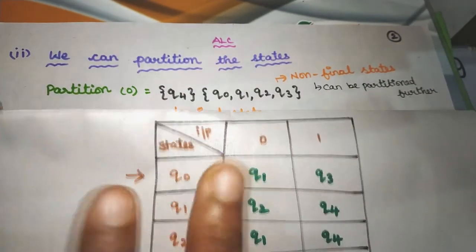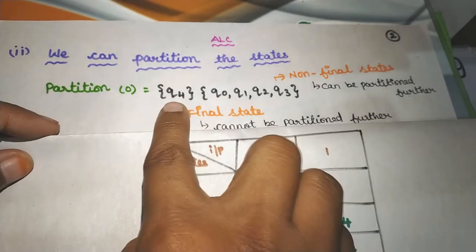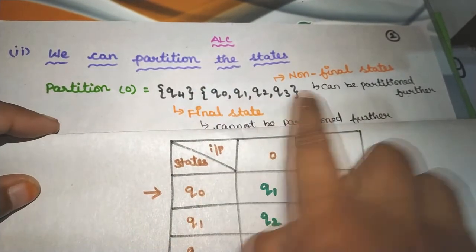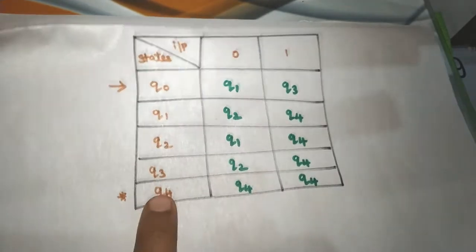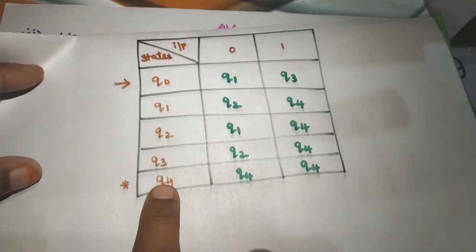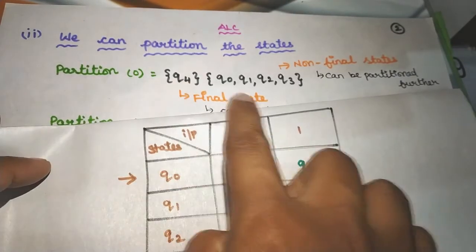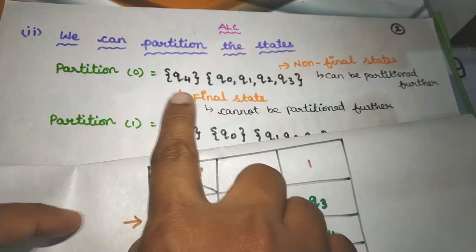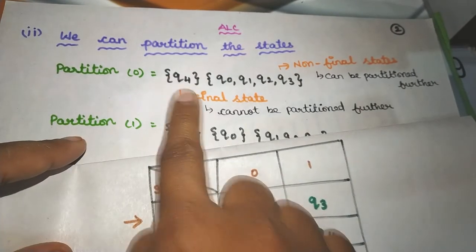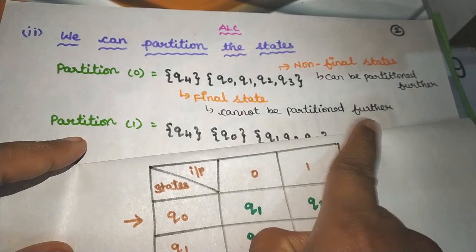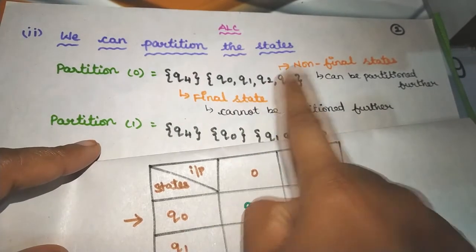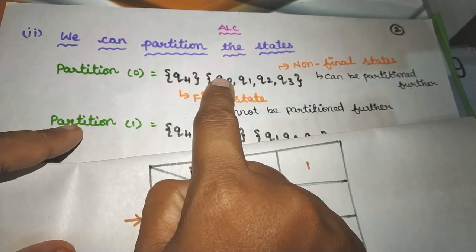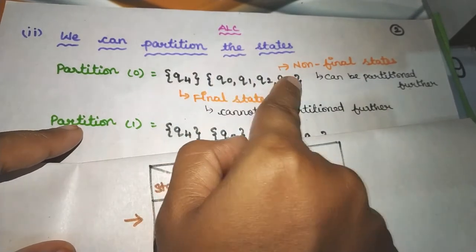There are two sets: one set contains the final state, and the other contains the non-final states. Q4 is the final state, so Q4 is in one set. All the remaining states are in another set as non-final states. We can do a partition, and then compare the remaining states.